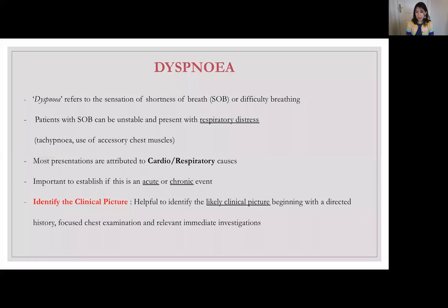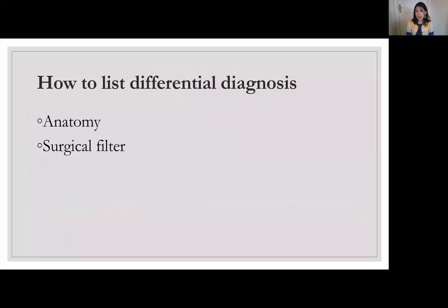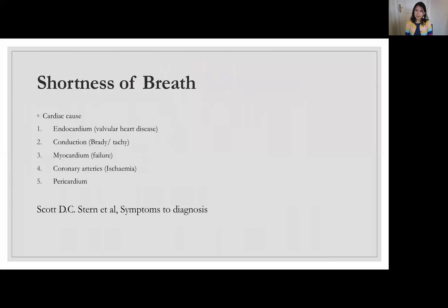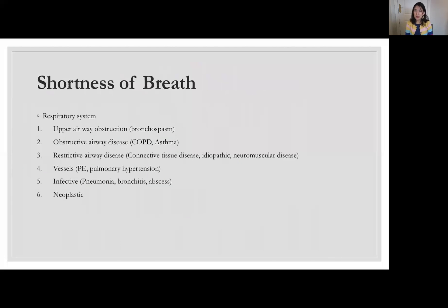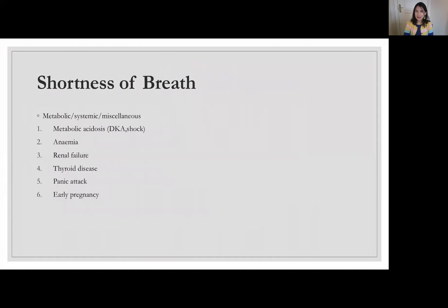The first step of this approach, as I mentioned, is to categorize differential diagnoses. We list cardiac causes of shortness of breath using the anatomy of the heart, and we write down respiratory causes using the pathophysiology of respiratory problems. Here are the other systematic causes of shortness of breath. It is important to consider metabolic causes in patients with certain comorbidities, such as diabetes, chronic kidney disease, anemia presenting with shortness of breath on exertion, and aortic stenosis.